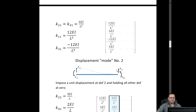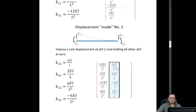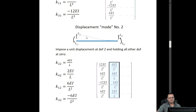Now we will derive the second mode stiffness coefficients. For mode 2, instead of imposing a unit displacement at degree of freedom 1, we will impose a unit rotation at degree of freedom 2. K12 is the force at degree of freedom 1 due to a unit rotation at degree of freedom 2, and so on.